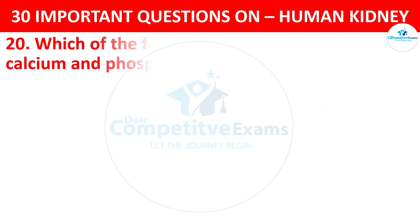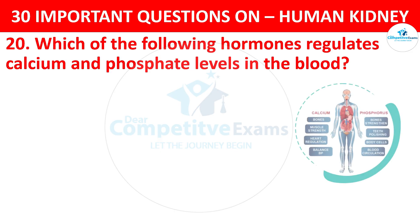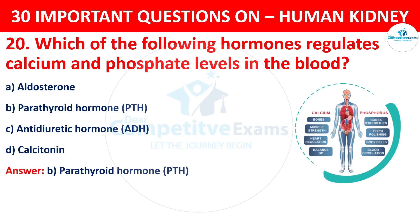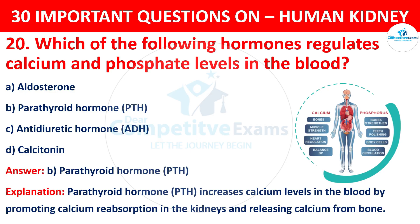Question 20. Which of the following hormones regulates calcium and phosphate levels in the blood? The options are: Aldosterone, Parathyroid Hormone (PTH), Antidiuretic Hormone (ADH), or Calcitonin. The correct answer is B, i.e. Parathyroid Hormone. PTH increases calcium levels in the blood by promoting calcium reabsorption in the kidneys and releasing calcium from bone.